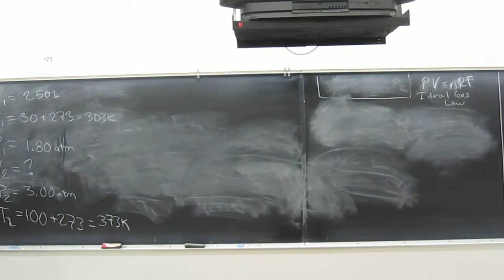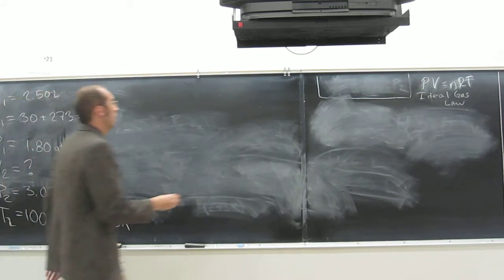So V1 changed, right, or V changed, T changed, and P changed. So this is the combined gas law. More than one, more than two variables, two types of variables.